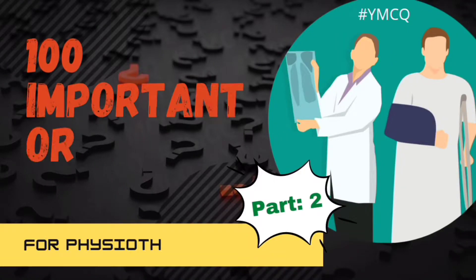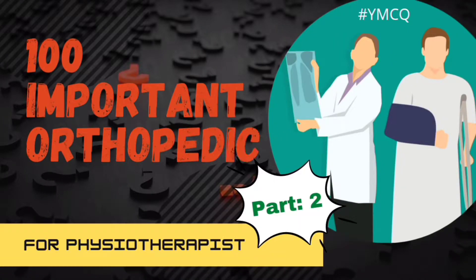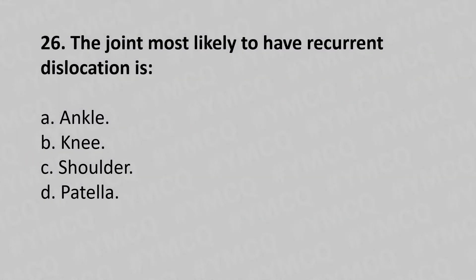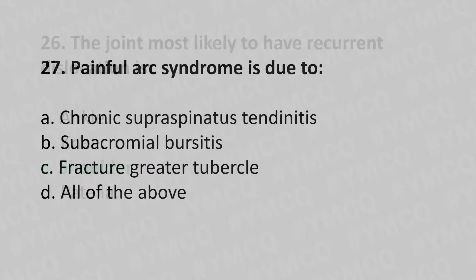Hello, welcome to part two of this series. Let's move to our first question: the joint most likely to have recurrent dislocation is option A ankle, option B knee, option C shoulder, option D patella. The answer is option C shoulder.